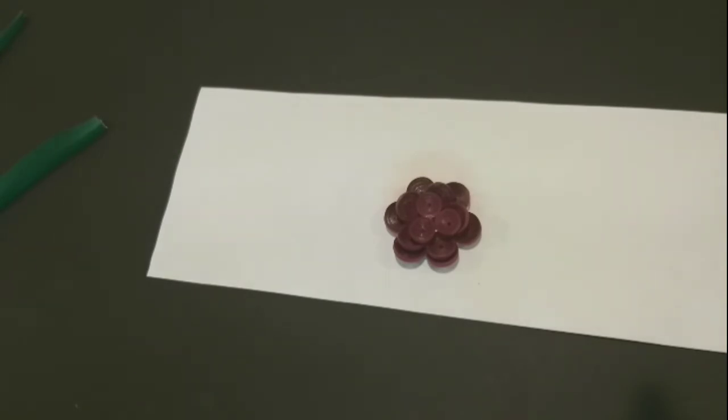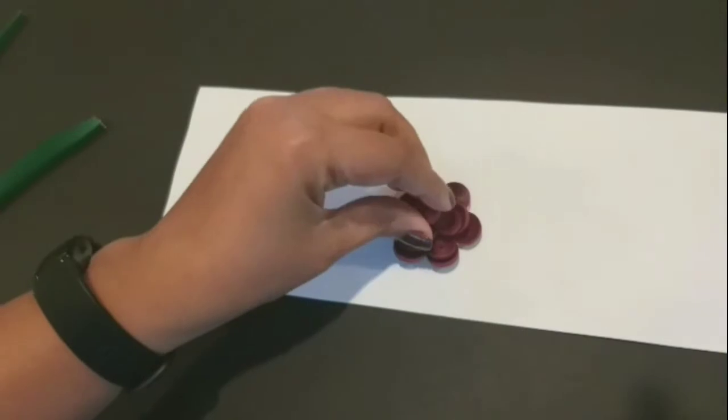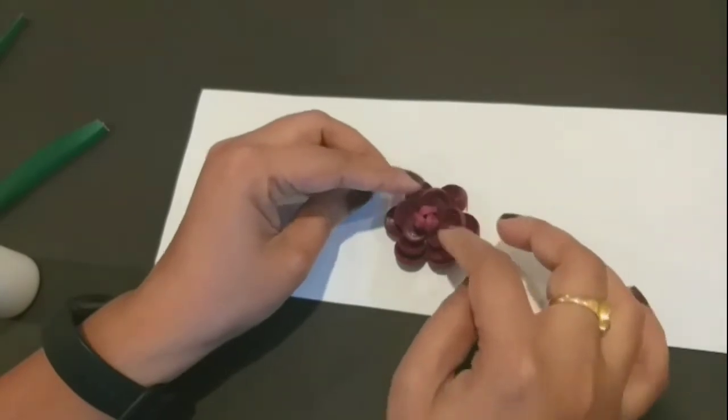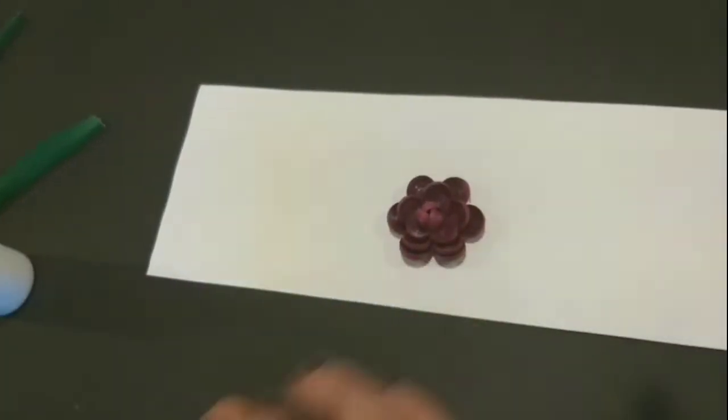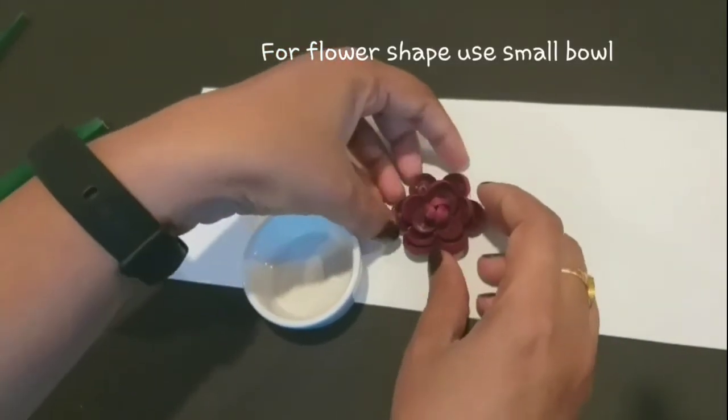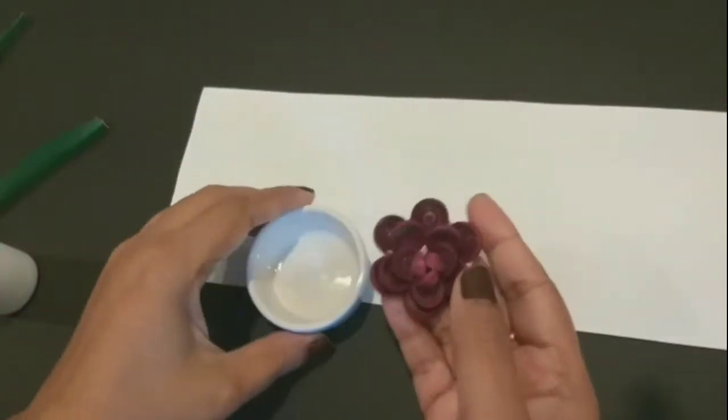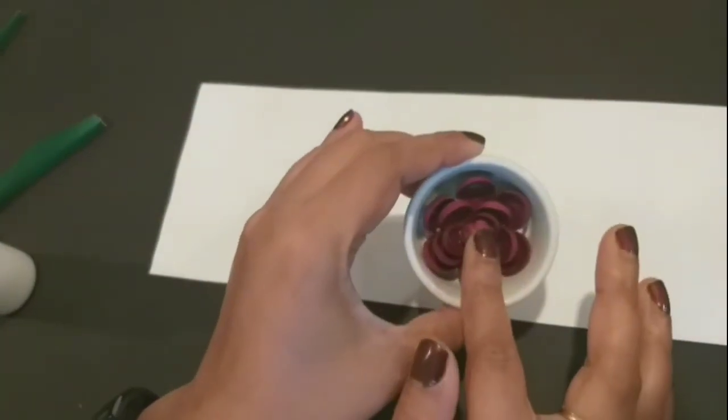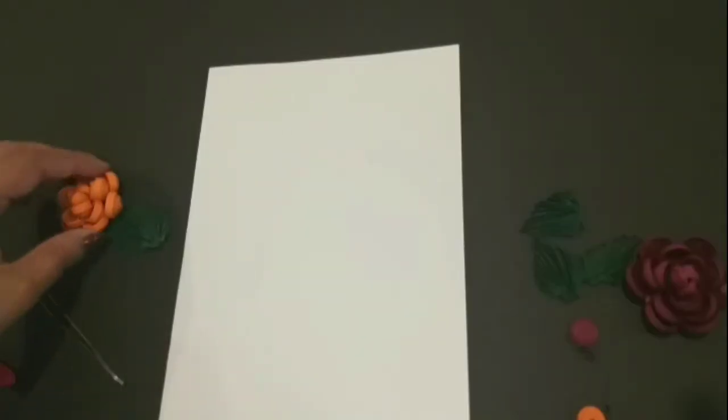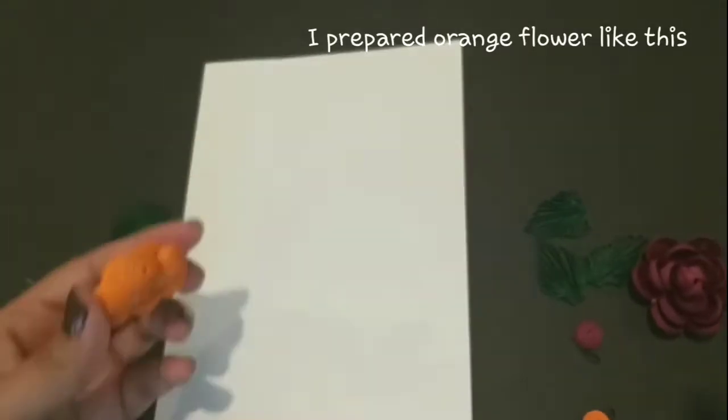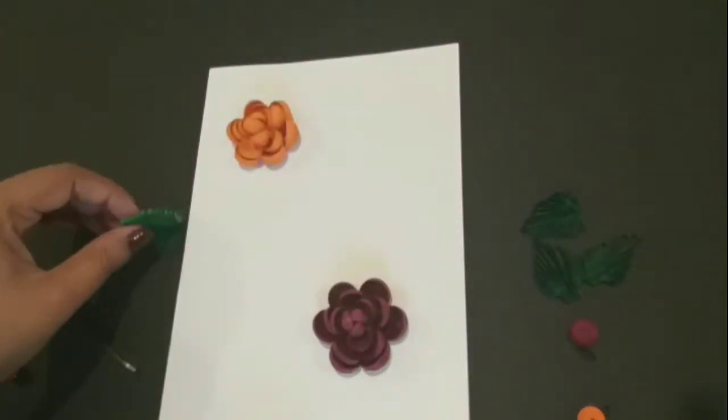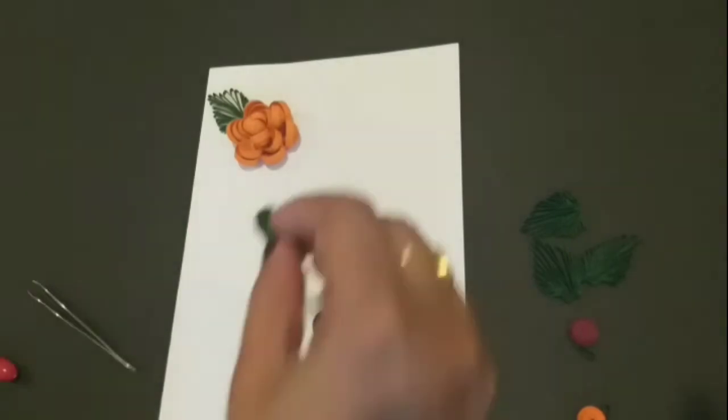4th layer. Attach all layers to the bottom. I am going to use the same orange color. I am going to attach the glue to the cord.